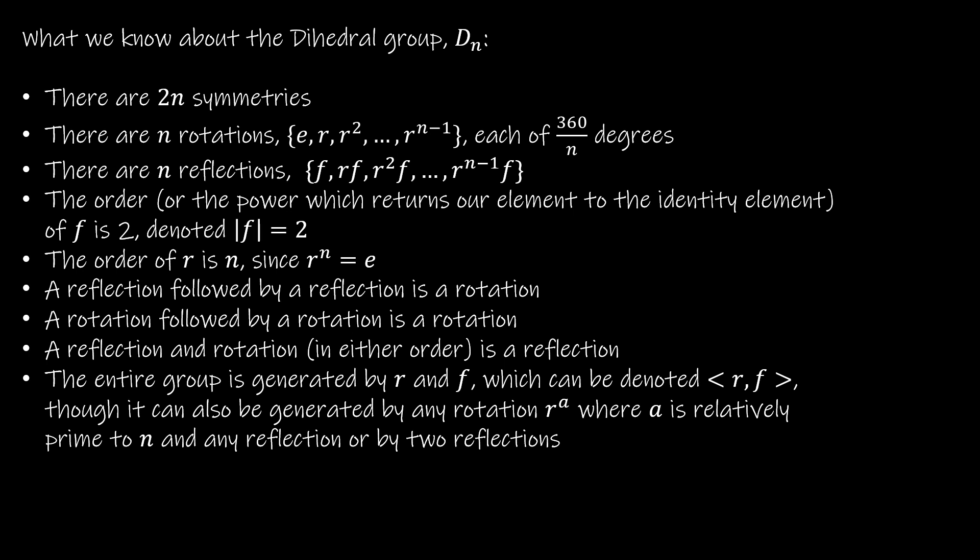A couple of things we haven't talked about. The order, or the power which returns our element to the identity, of F is two. So, if you'll remember, when we had our Cayley table, and we had E, and we had F, and we had a solid line with no arrows on the end, that's a power of two, because if I perform a flip, and then I flip back, I end up back at the identity. The order of R is N, because R to the Nth power would be E. So, R to the fourth in D4 would get me back to the identity.